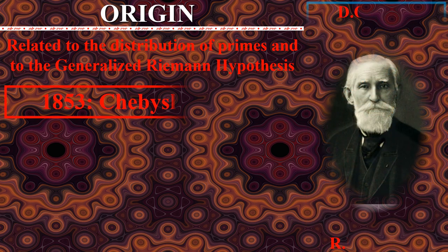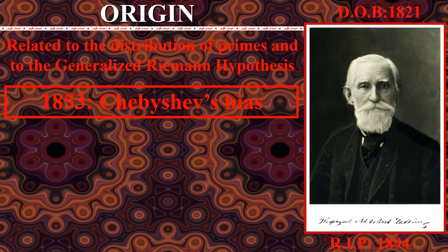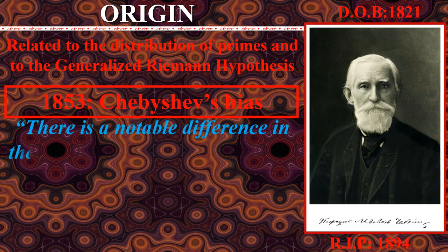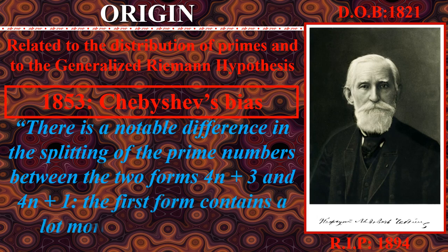It was first discovered by a Russian math professor Chebyshev in 1853, when he observed that there were more primes of the form 4n plus 3, than 4n plus 1.